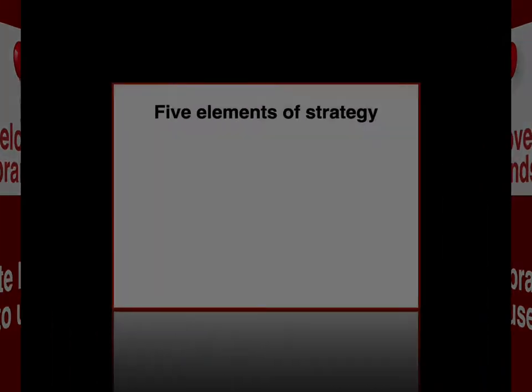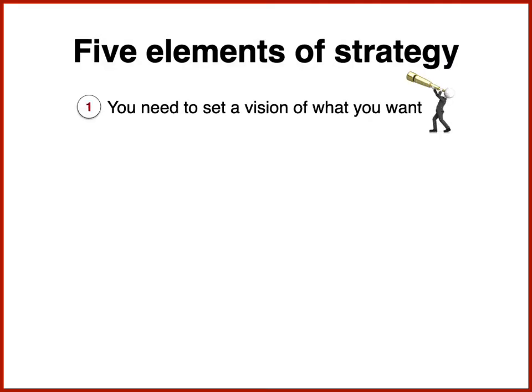First, I want to introduce you to the five elements of strategy. The first thing I want to see in any strategy is a vision of what you want for the future. I think of this as an aspirational stretch target, and I look at this as thinking about what is the ideal state five or ten years from now.